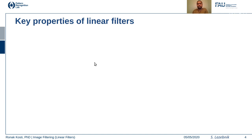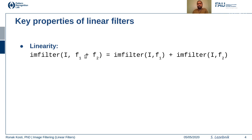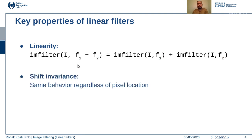What specifically do we mean when we say a filter is linear? For a filter to be linear it must satisfy two important properties. The first is linearity: if f1 and f2 are filters and i is an image, the property says that if you combine two different filters linearly and do a filtering operation, that is equivalent to applying each individual filter separately and then adding the results.